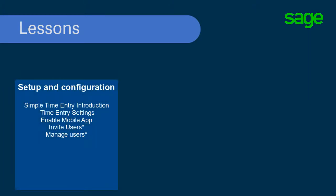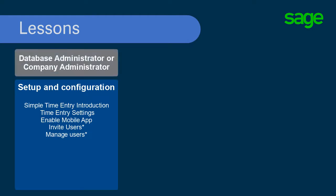There are key personnel who should view these lessons. The person who has access to database administration for Sage 100 Contractor software should view the configuration lessons. This includes the lesson Enable Mobile App. Company Administrators who manage settings and users in Sage 100 Contractor should view the setup lessons. These lessons include time entry settings, invite users, and manage users.